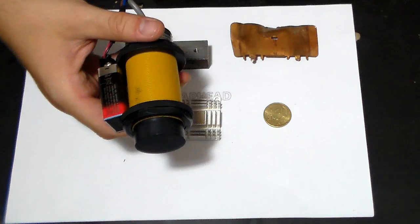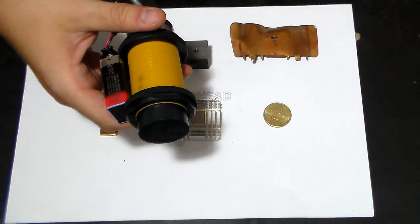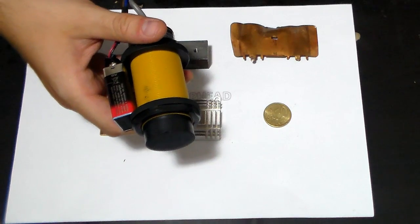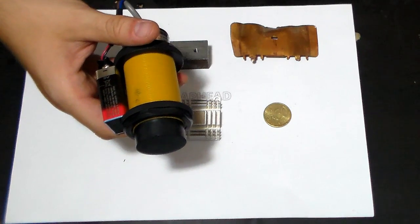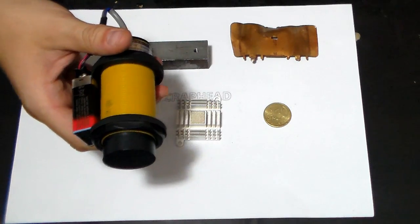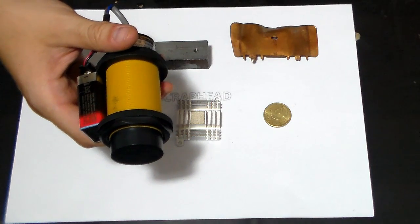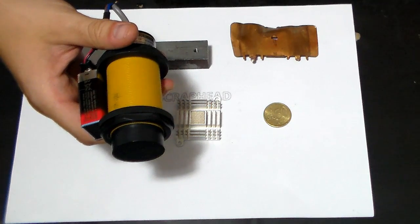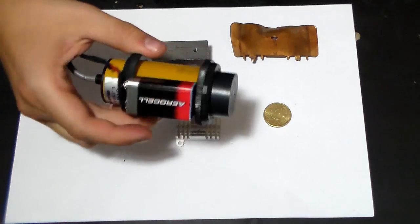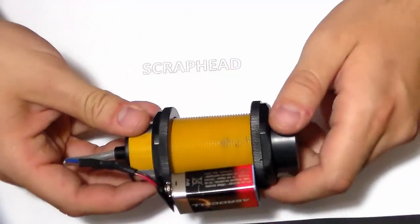In comparison to this, a professional pinpointer like the Garrett AT Pro, which is about 150 euros, has a search depth of about 3 cm. So there's only a difference of about 1.2 cm.